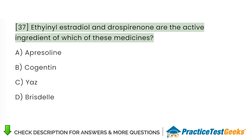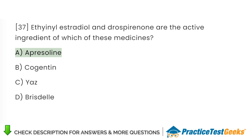Ethinyl estradiol and drospirenone are the active ingredients of which of these medicines? A. Apresoline. B. Cogentin. C. Yaz. D. Bristel.